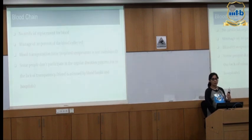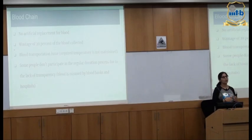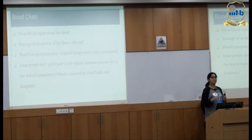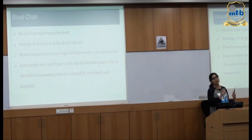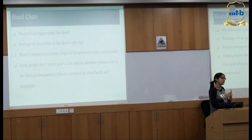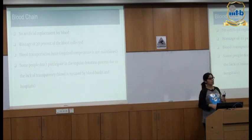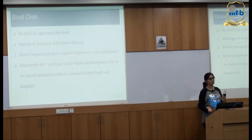Another example is blood chain. There is no artificial replacement for blood, and blood donors are not sure their donation is properly transported, secured, or reaching the needy person. By attaching an IoT sensor to a blood sample and storing its data on a blockchain, the donor can track wherever the sample goes and get notified when it reaches the recipient — helping increase blood donation rates.